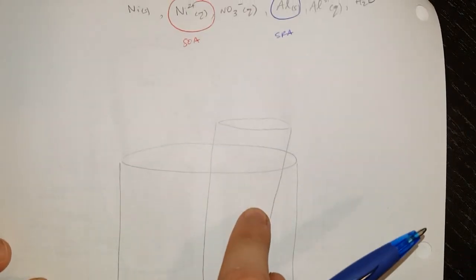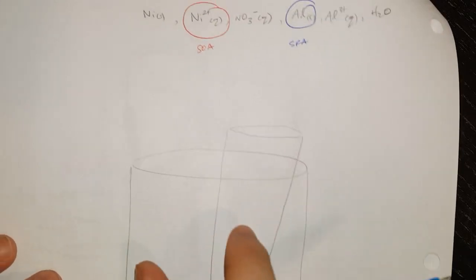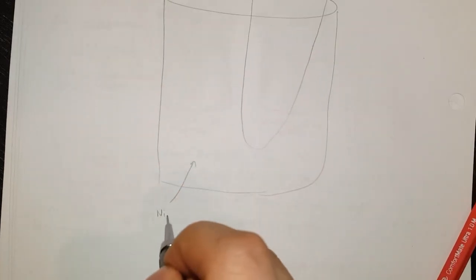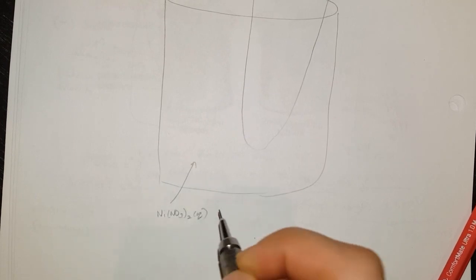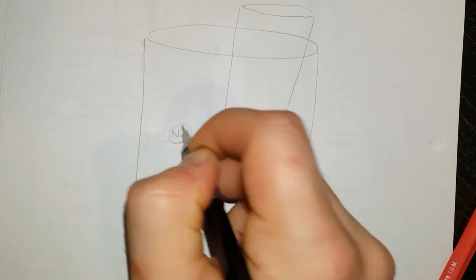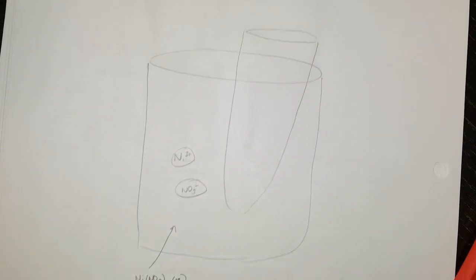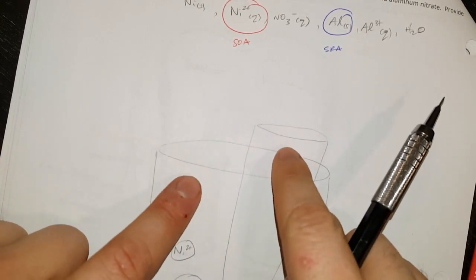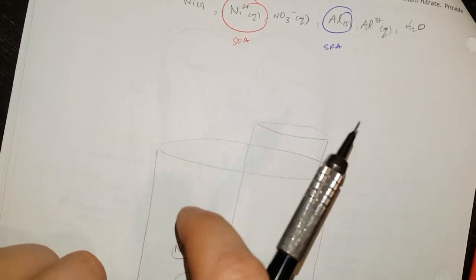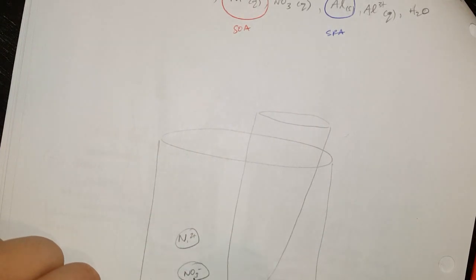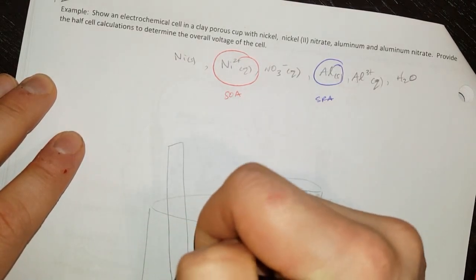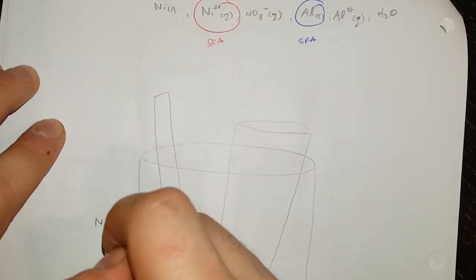A half cell here and a half cell here. It doesn't matter which one you put where — they just have to be separate. I'm going to assume that my nickel(II) positive is in here, so this right here is going to be my nickel nitrate solution, which means I have nickel ions and nitrate ions. I need to put something in this beaker that won't react, so I should just put nickel — a nickel electrode — because nickel electrodes won't react with nickel ions.